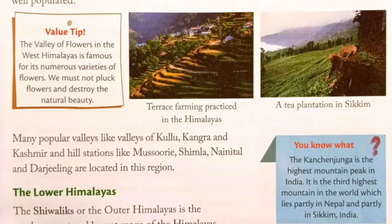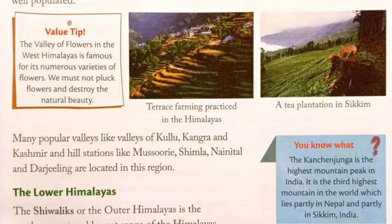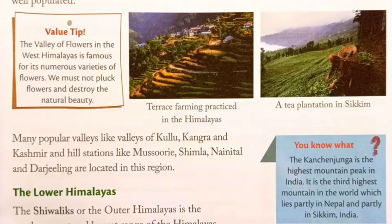The Valley of Flowers in the West Himalayas is famous for its numerous varieties of flowers. We must not pluck flowers and destroy the natural beauty. There are two pictures: one showing terrace farming practiced in the Himalayas and another showing a tea plantation in Sikkim. Many popular valleys like Kullu, Kangra and Kashmir, and hill stations like Mussoorie, Shimla, Nainital and Darjeeling are located in this region.